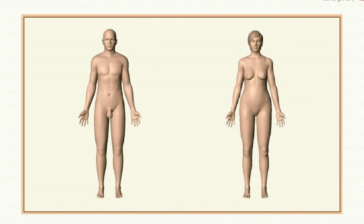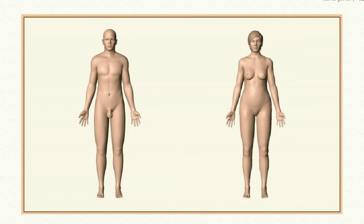When the sperms come in contact with the ovum, fertilization takes place, leading to the development of a fetus. The fetus develops inside the uterus of the female human body and is delivered as a human baby. The reproductive system functions in the development of a new generation of the human body.